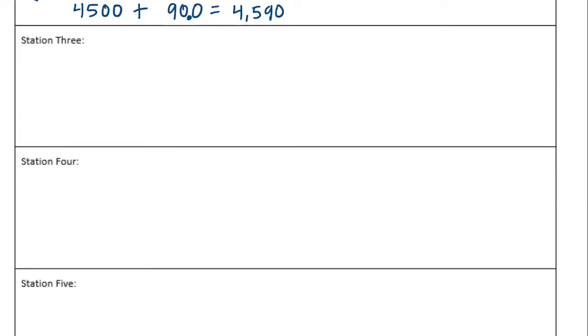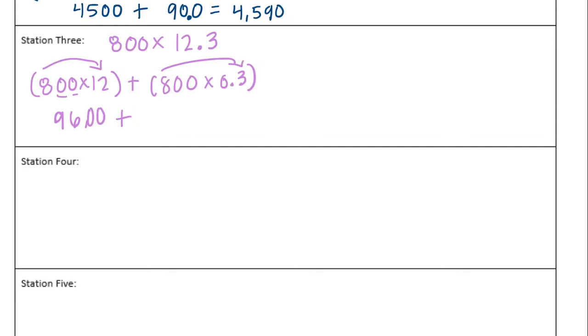Station three: calculate the product of 800 times 12.3. We have 800 times 12 plus 800 times 0.3. 800 times 12: 8 times 12 is 96, add two zeros—9,600. Plus 8 times 0.3: 8 times 3 is 24 with two zeros, but I need to divide by 10 because it's 3 tenths, so we get 240. 9,600 plus 240 equals 9,840.